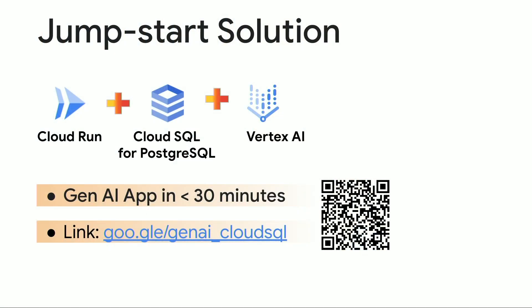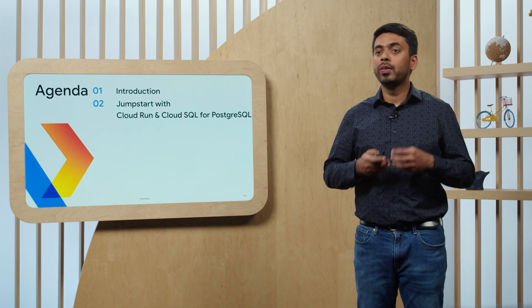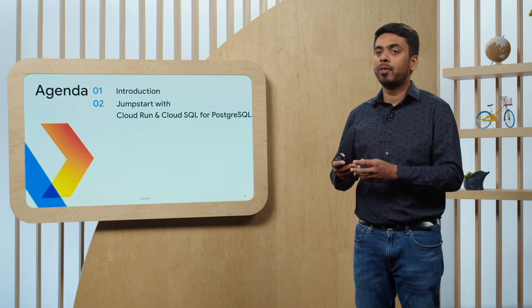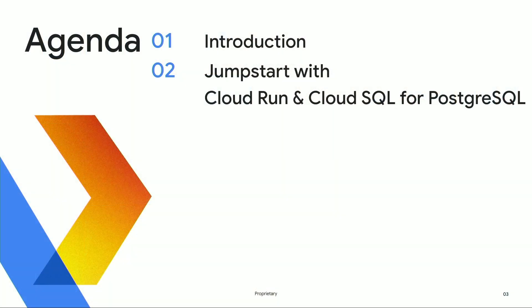We have posted this solution on GitHub. Here is the link and the QR code for the GitHub repo from where you can download it and start building your Generative AI application. In this session today, we are going to start with an introduction of the key topics which are very important for Generative AI applications, and then we will go into the details of the jumpstart solution.